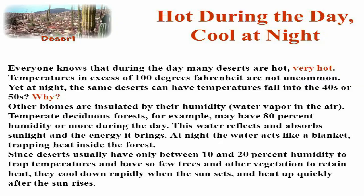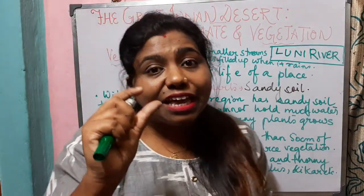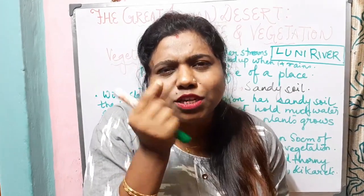Today we learned about the climate of the desert - which is very extreme. In summers, during the day it is hot and dry and at night it is cool. In winters the days are warm and pleasant and at night it is colder. We also learned about vegetation - the plant life of a place. As the soil is sandy and it receives very little rainfall, very few plants grow. The plants that grow have long roots and small thorny leaves so that they can hold water, just like cactus.